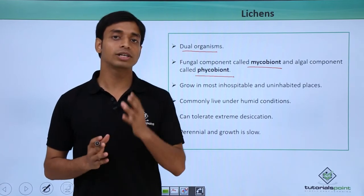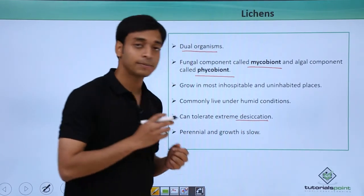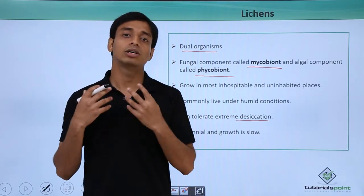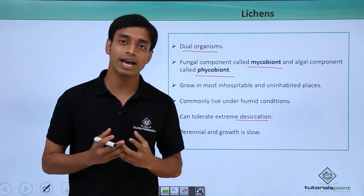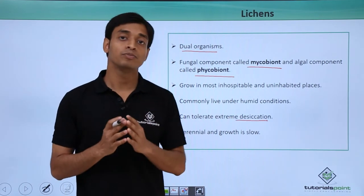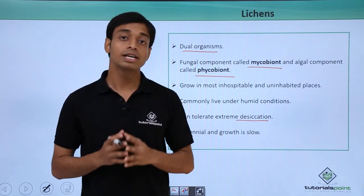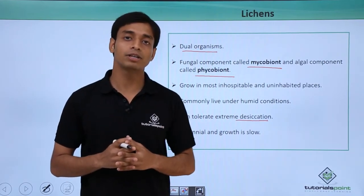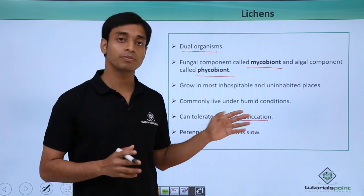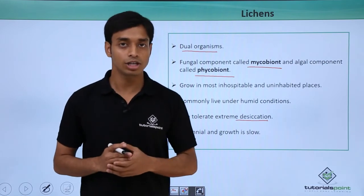A very important property of lichens is that they can tolerate extreme desiccation — that is, loss of a lot of water — to a very high range. But unfortunately, they cannot tolerate air pollution, specifically air pollution that is happening because of sulfur dioxide.